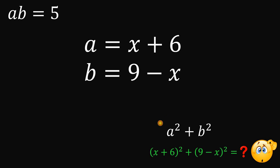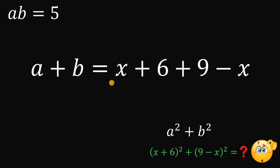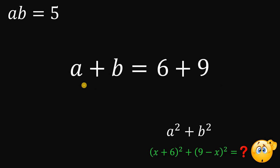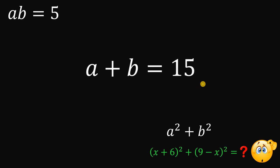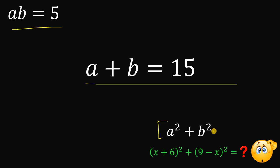Now, how can we find the value of a squared plus b squared? Notice that a equals positive x plus 6, and b equals 9 minus x. So why not add these two together? Because we have a positive x and a negative x — if we add them, they cancel out to 0. So we can say that a plus b equals 6 plus 9, which is just 15. Using these two equations, a plus b equals 15 and a times b equals 5, we are now ready to find the value of a squared plus b squared.